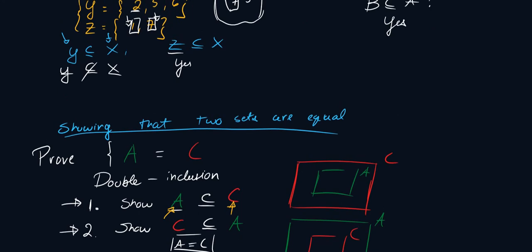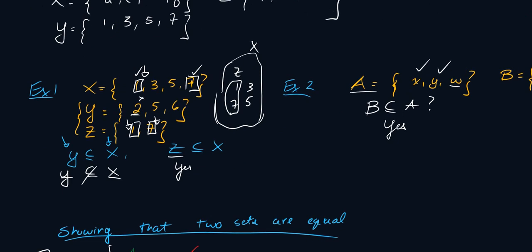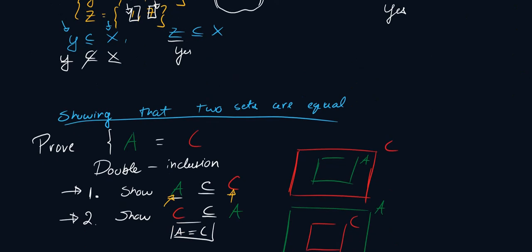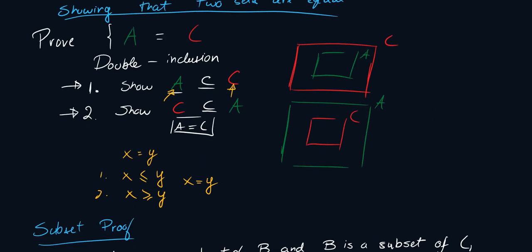We showed how to show that two sets are equal. We also talked a bit about subsets and what a set is. I mentioned that the only thing I hadn't talked about was showing how to prove that A was a subset of C, or showing a subset proof.